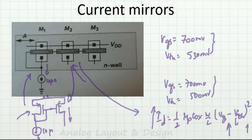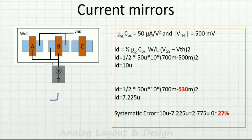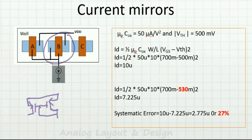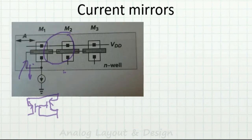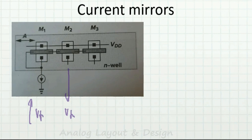In this reversed case, if the diode-connected device mirrors 10 µA, the output device can produce around 12.5 µA. So the mismatch is now increasing the current. In the earlier case, the mirroring device had the higher threshold and produced less current; in this case it is the opposite — the mirroring device has a lower Vth and therefore mirrors a higher current.